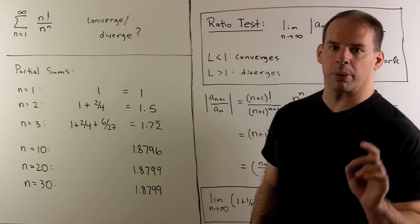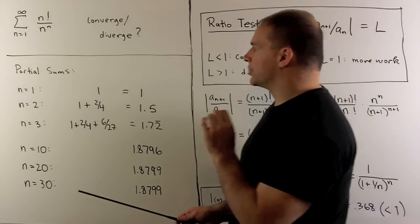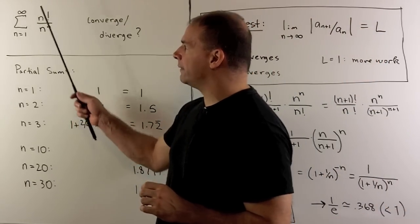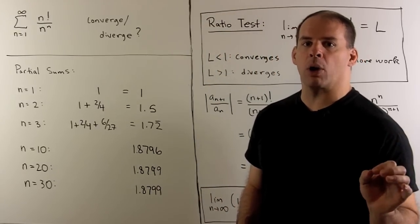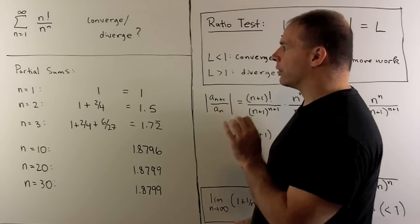Let's consider the following series problem. There's a series as n goes from 1 to infinity, n factorial over n to the nth power. Does it converge or diverge?